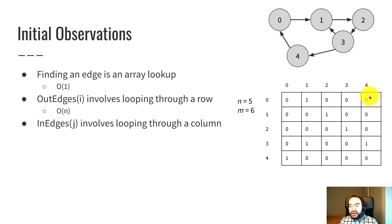So I can compute the in edges to four by looping through all of the rows at column four. But again, that's big O of n time to loop through all of the rows.